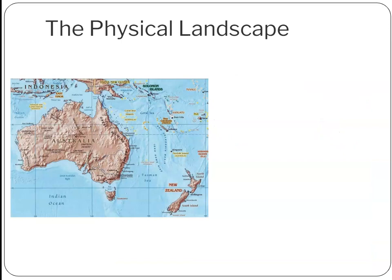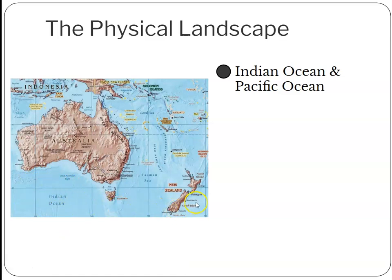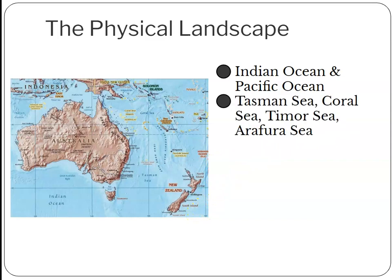Let's look at some of the physical landscape. Being that this is a very island-heavy realm, we have some oceans involved — the Indian Ocean here in the south, and the Pacific Ocean off to the east of New Zealand. There are a whole series of seas dividing up the different aspects of this realm. Notably, the Tasman Sea divides Australia and New Zealand. A bit farther north, we have the Coral Sea, which divides Australia from the Solomon Islands, Vanuatu, New Caledonia, and other parts of the Pacific or Southeast Asia. We also have the Timor Sea, which divides East Timor from Australia.